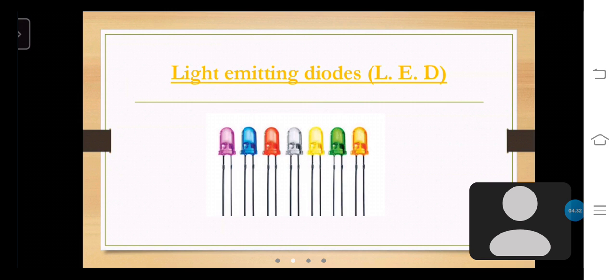They are called light-emitting diodes. They are really diodes. Here also, the light flows through a diode only in a particular direction.